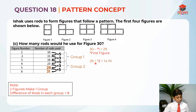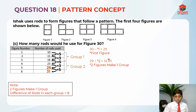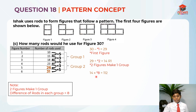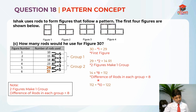So this is the first figure. Now, 29 divided by 2 — this 2 came from 2 figures make 1 group — which gives us 14 remainder 1. The quotient is 14 and the remainder is 1. Then we take 14 times 8 which is equal to 112. This 8 came from the difference of rods in each group. So after we are done with this, we multiply by the difference in rods in each group. Then 112 plus 10 equals to 122. This 10 came from the number of rods in figure 1 — we are adding back the first figure since we minused it at the start.